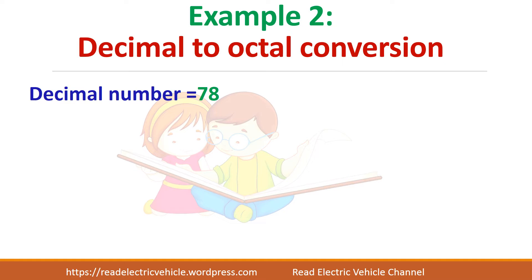For the second example, the decimal number is 78. To convert this to octal, you have to use repeated division. Similar to decimal-to-binary conversion seen in the previous video where we divided repeatedly by 2 (the base of binary), here for decimal-to-octal conversion we divide the given decimal number by 8, since the base of octal is 8.